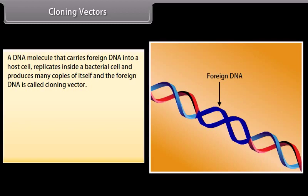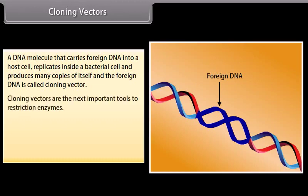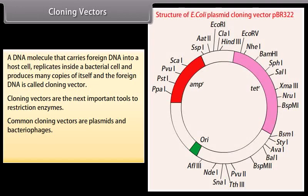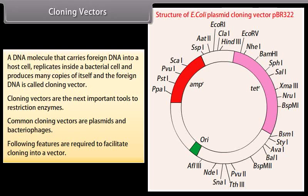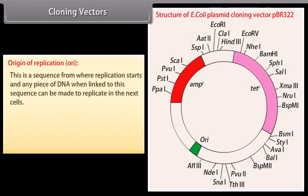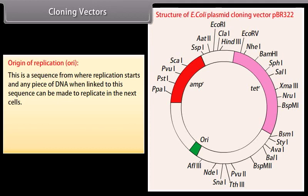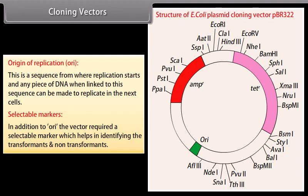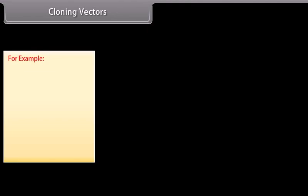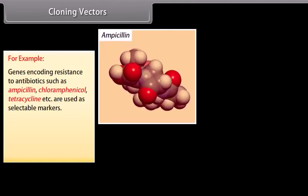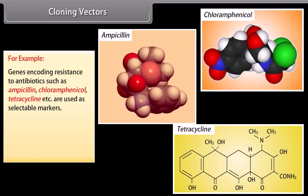The DNA molecule that carries foreign DNA into a host cell, replicates inside a bacterial cell, and produces many copies of itself and the foreign DNA is called a cloning vector. Cloning vectors are the next important tools after restriction enzymes. Common cloning vectors are plasmids and bacteriophages. Features required to facilitate cloning into a vector include: origin of replication (ORI) — a sequence from where replication starts; and selectable markers, which help in identifying transformants and non-transformants, for example genes encoding resistance to antibiotics such as ampicillin, chloramphenicol, tetracycline, etc.